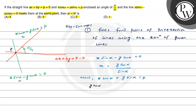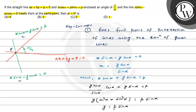Substituting x = y·cosα/sinα into x·cosα plus y·sinα equals p: we get y·cos²α/sinα plus y·sinα equals p. Taking y as common: y times (cos²α plus sin²α)/sinα equals p. Since cos²α plus sin²α equals 1, we get y equals p·sinα. Therefore x equals p·sinα·cosα/sinα equals p·cosα.